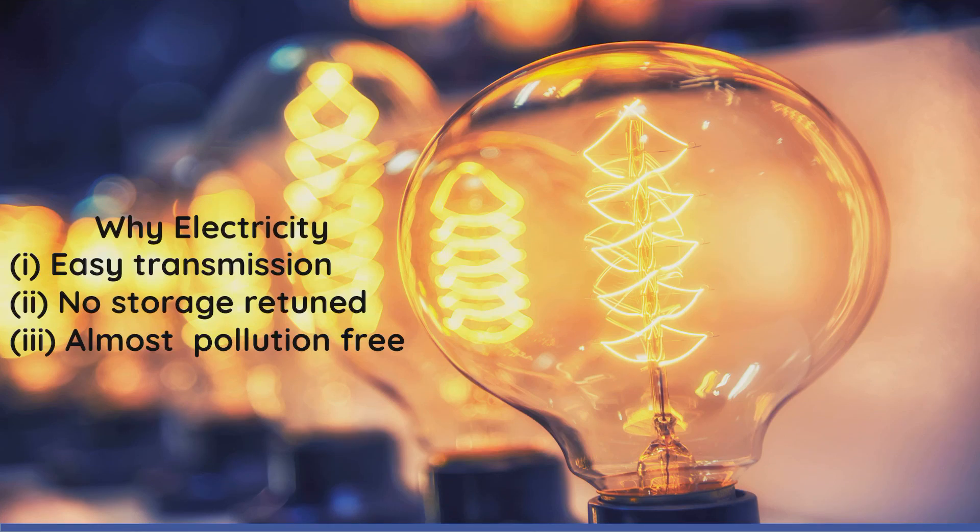Our chapter is electricity. Just like you can see here, this bulb is glowing. When electricity is not there, then it doesn't glow. You will be surprised that approximately 80 to 90 percent of things are being run by electricity.